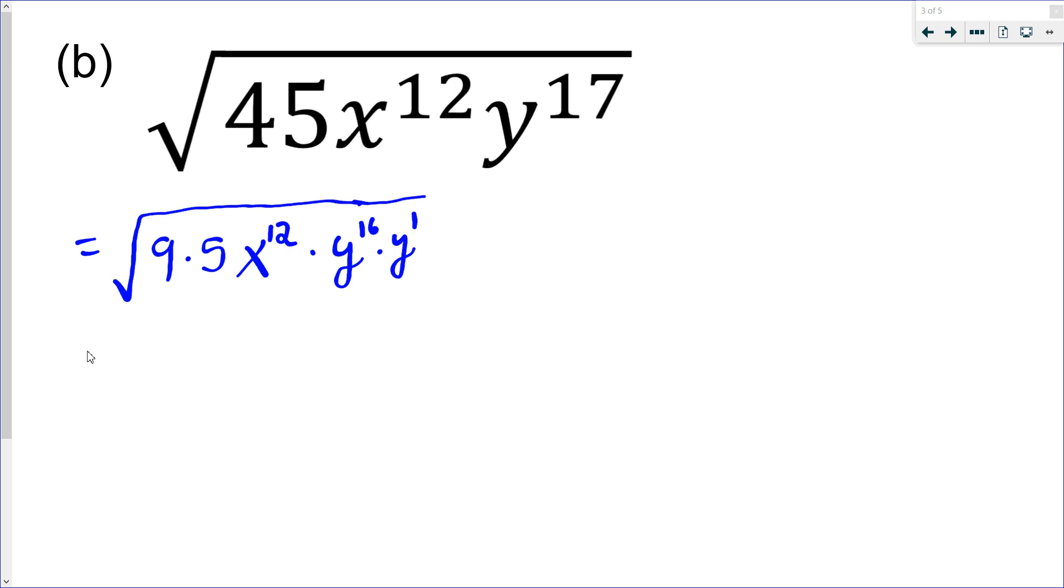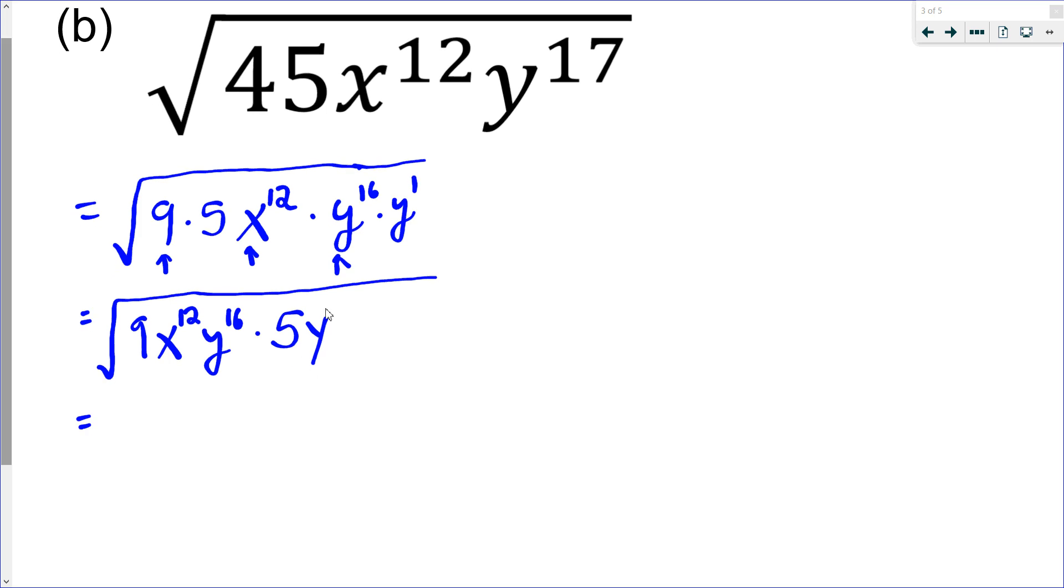Now, all the perfect stuff goes together. The 9, x^12, y^16. So I have 9, x^12, y^16. Those are best buddies, all perfect. And then 5 and the y, those are the misfits. They get left behind. They're not going anywhere. So these are non-perfect. So that means they have to be left behind underneath the root.